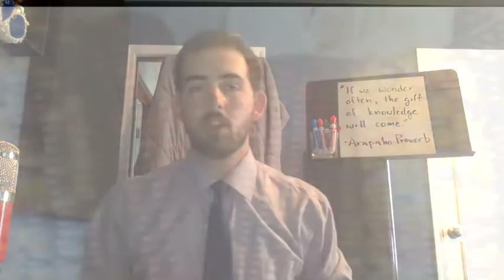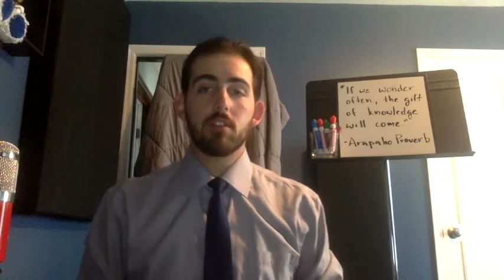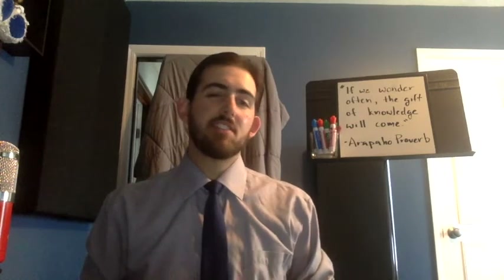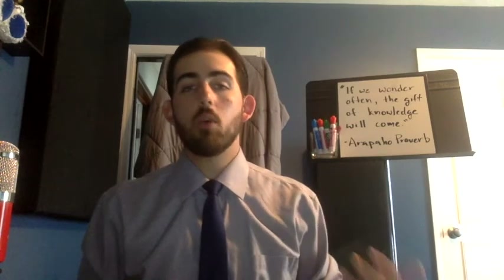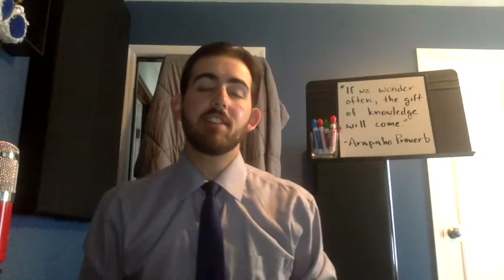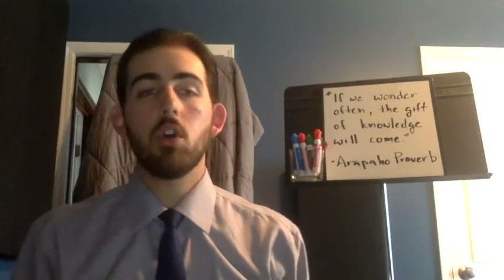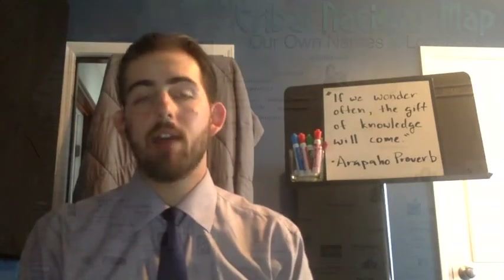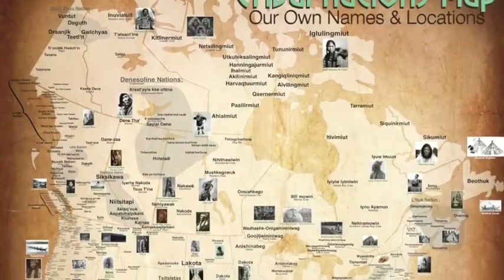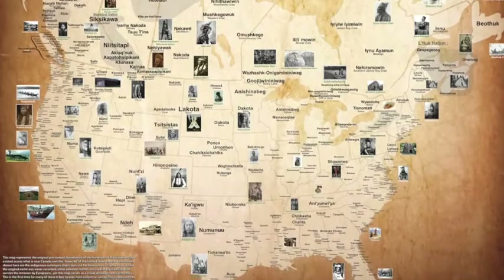But often there's a better option, and that brings us to rule number two: whenever possible, use specific tribal names. The historical record is not perfect, but in many cases it reveals the specific tribe or nation that American colonists, and later American citizens, had dealings with. In order to respect the diversity of First Nations people, use the name preferred by that tribe. This map is a helpful resource, and it contains the preferred tribal names alongside their approximate homeland. I'll include a link below.